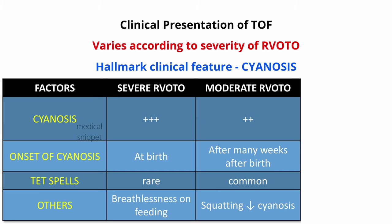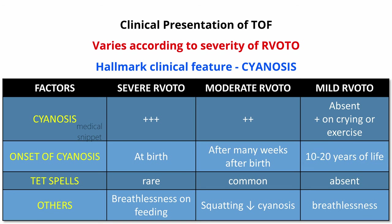Infants with moderate RVOT obstruction develop cyanosis after many weeks of birth; tet spells are common. Cyanosis is often accompanied by squatting, which lessens the severity of cyanosis. In case of mild RVOT obstruction, they develop mild cyanosis during exercise or crying, and tet spells don't occur. They develop cyanosis and breathlessness in the first or second decade of life due to progressive increase in RVOT obstruction with age.